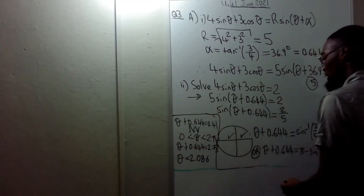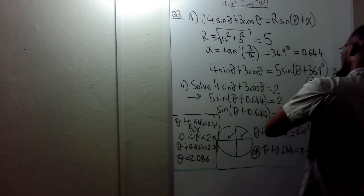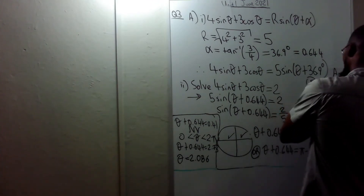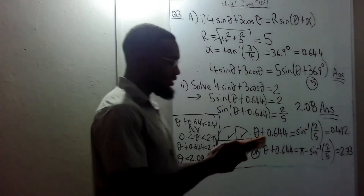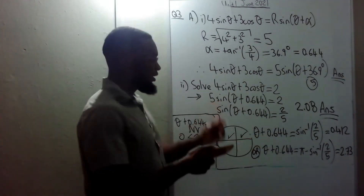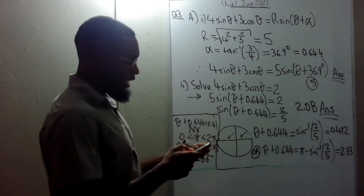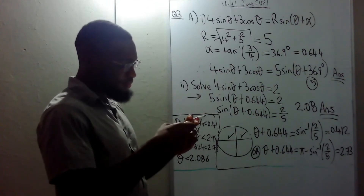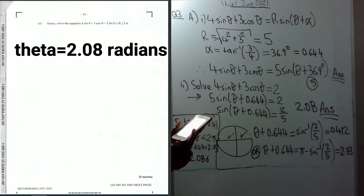The final answer is θ ≈ 2.08 radians, where θ is between 0 and 2π. They give five marks for that.